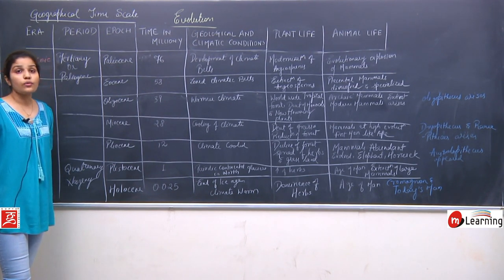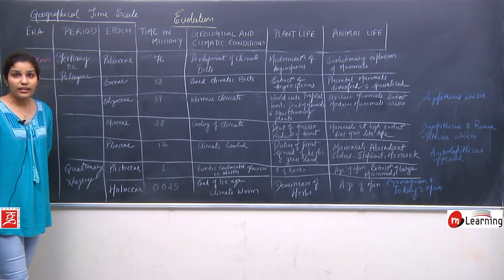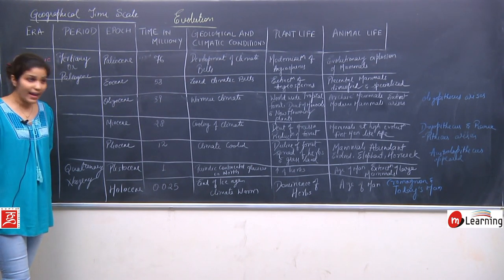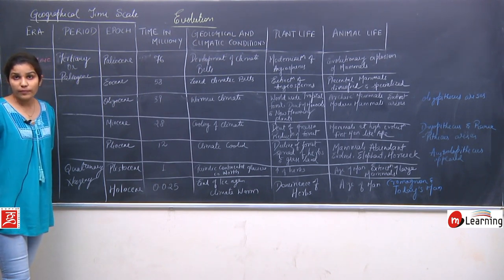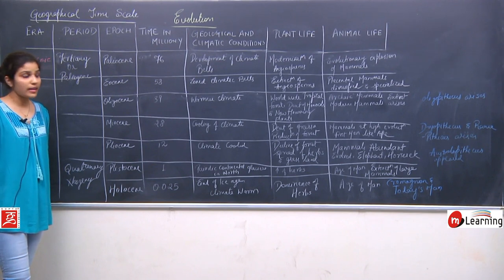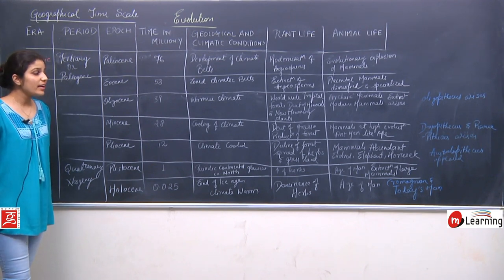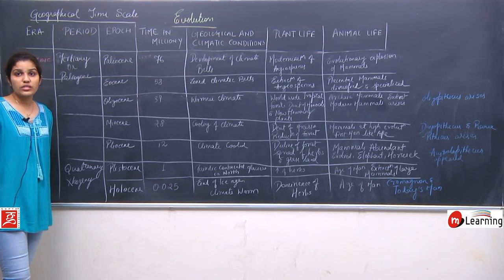In the Holocene epoch, around 0.025 million years ago, the ice age came to an end and conditions became appropriate for the environment. In plant life, herbs were dominant. This is the age of man — the Cro-Magnon and today's man appeared in the Holocene epoch.